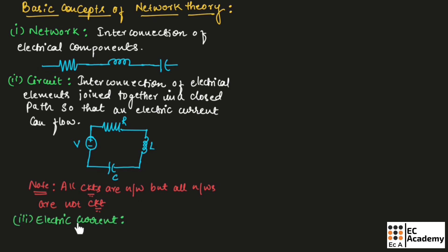Now, let us understand what is current. We can define current as the rate of flow of charges, which can be given as I is equal to Q by T.